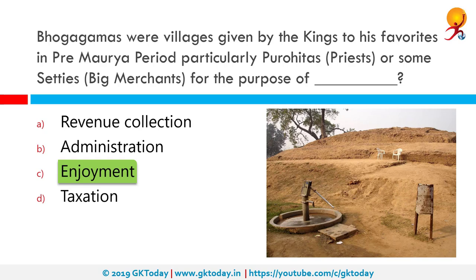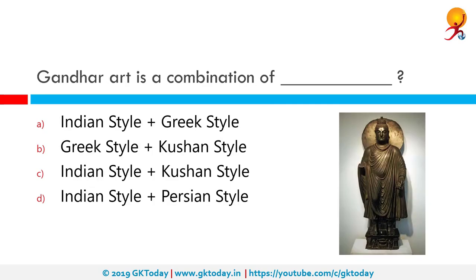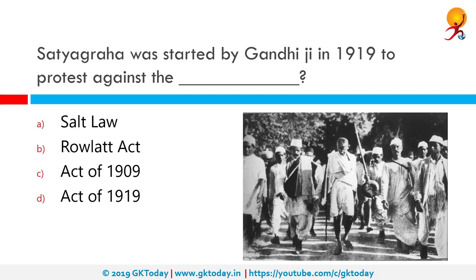Gandhar art is a combination of which styles? The correct answer is Indian and Kushan. Gandhar art style, a style of Buddha's visual art that developed in what is now northwestern Pakistan and eastern Afghanistan between the 1st century BCE and 7th century CE, is of Greco-Roman origin. It seems to have flourished largely during the Kushan dynasty and was contemporary with an important but dissimilar school of Kushan art at Mathura.